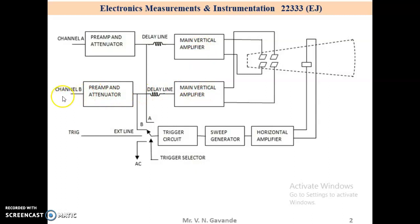Channel B also consists of its own pre-amplifier attenuator, delay line and main vertical amplifier. There is no any selection either A or B by electronics; they are directly applied to its own vertical plates.